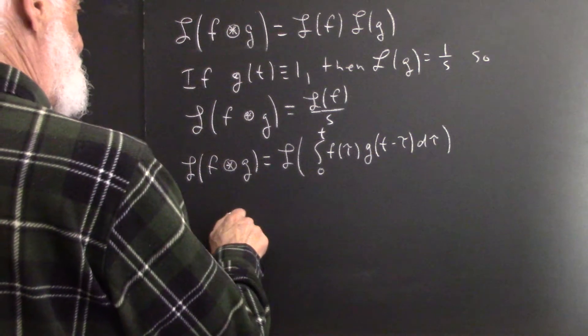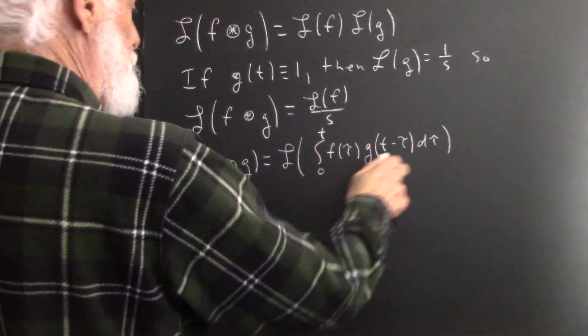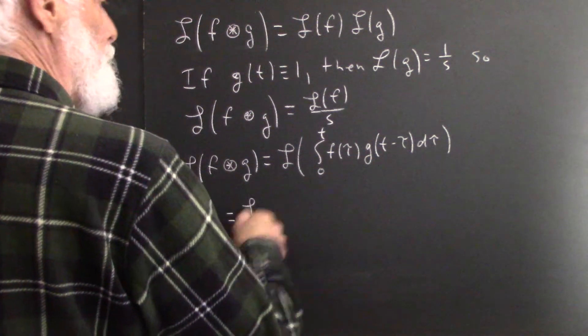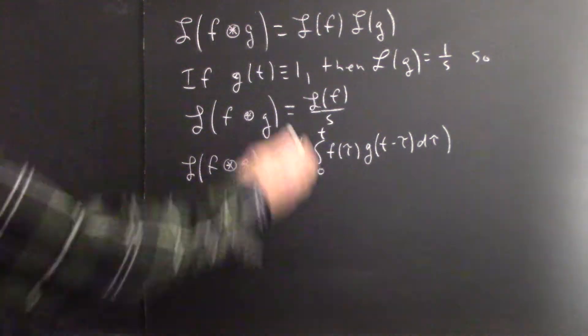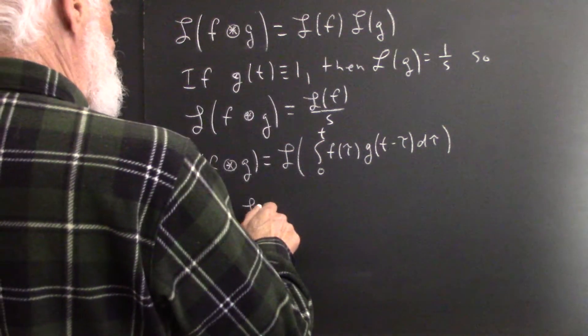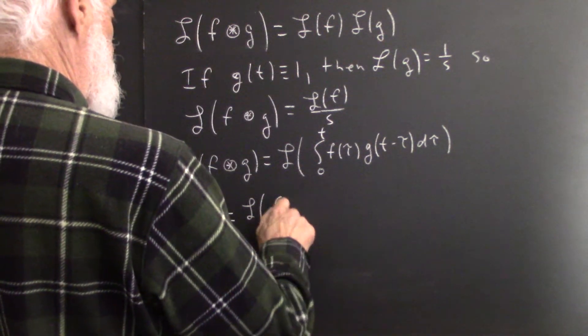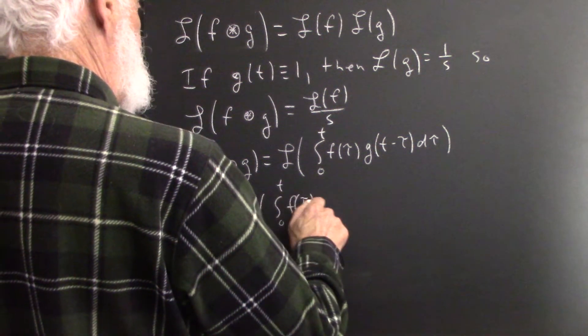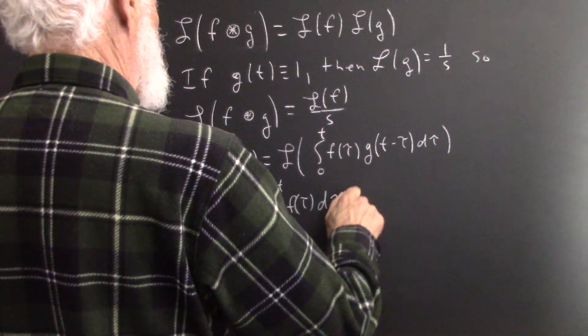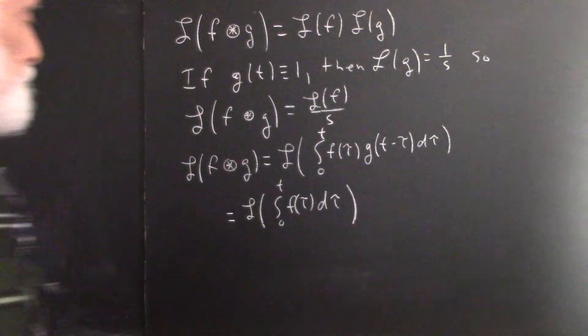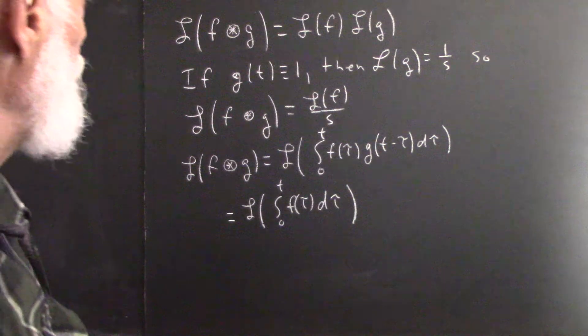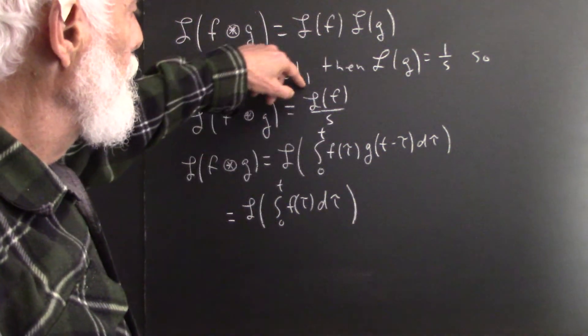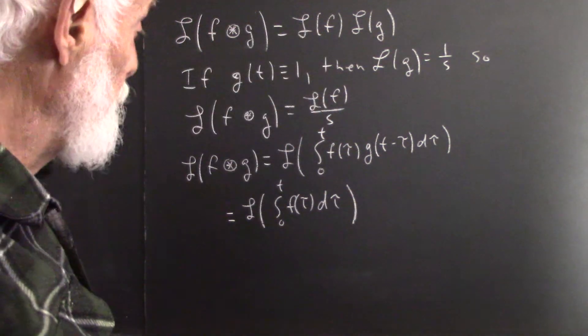Well, g of t minus tau is just 1 because g is identically 1. So this is the Laplace transform of the integral from 0 to t of f of tau d tau, and that's equal to the Laplace transform of f divided by s.